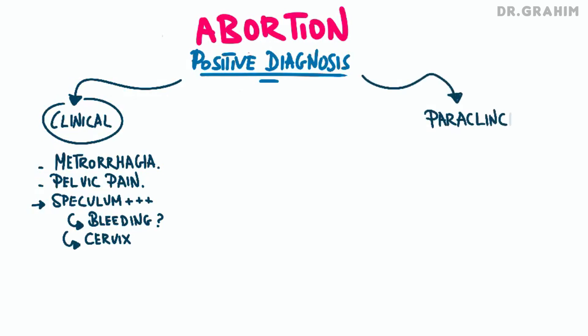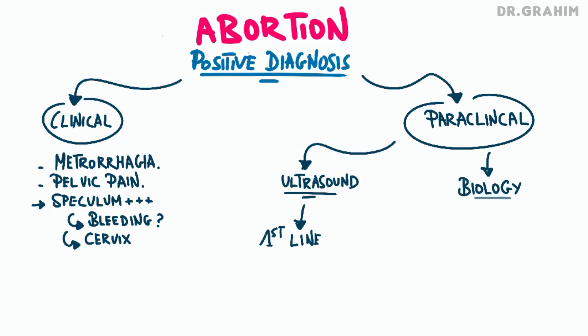When it comes to paraclinical examinations, paraclinical investigations allow confirmation of the clinical diagnosis and assessment of the severity and guidance for management. Pelvic ultrasound is the first-line examination to confirm the diagnosis, while biological tests are used to assess the impact of abortion on the patient's general condition. A complete blood count is done to evaluate hemoglobin levels and detect any possible anemia due to the bleeding, and a blood group test is done for potential transfusion.